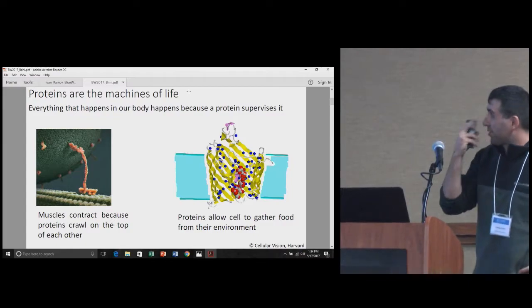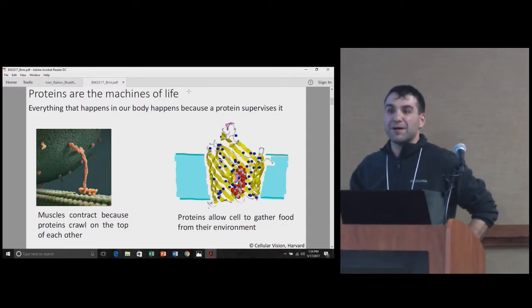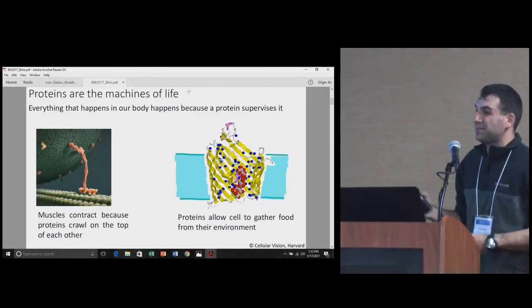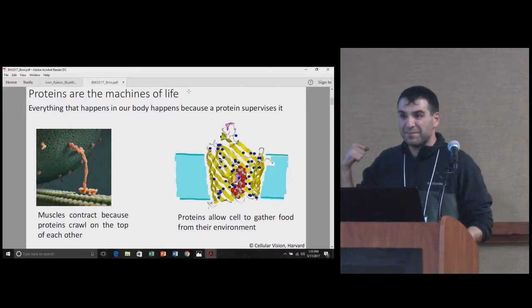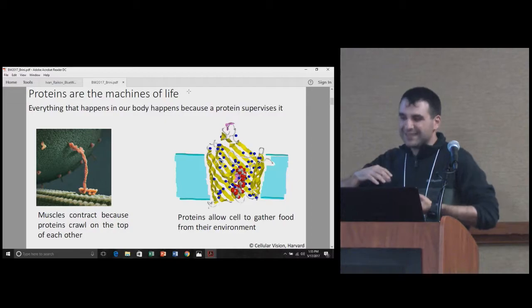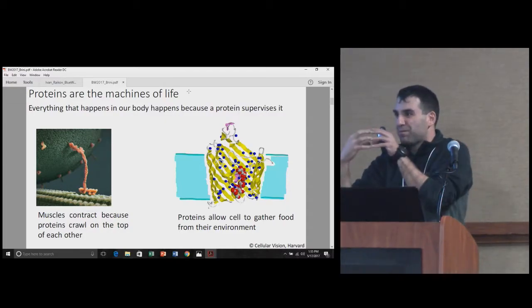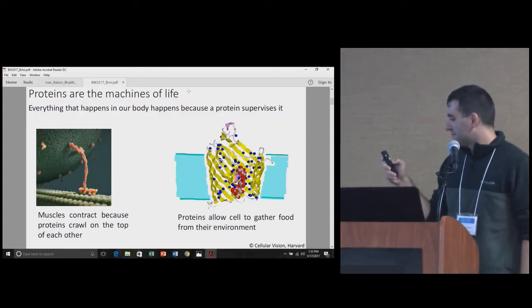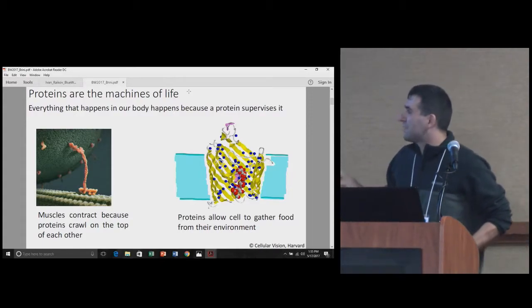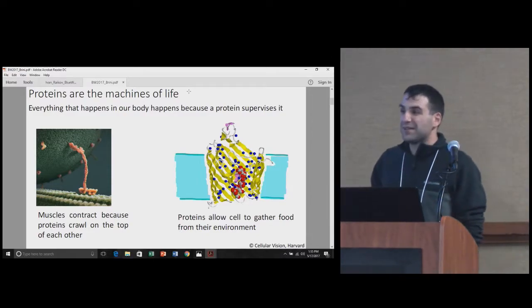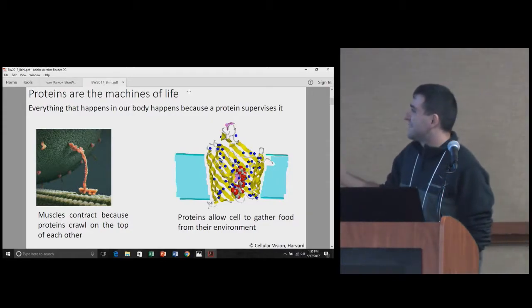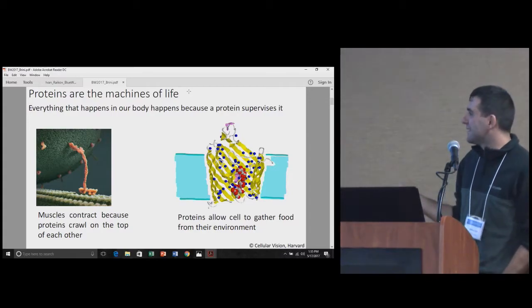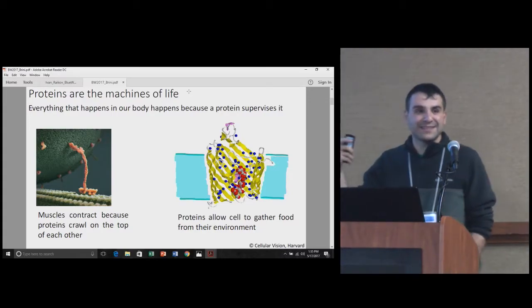My two cents about protein: why do we care about protein? Why do we study protein and why are we interested in understanding their shape? Well, proteins are the machines of life. Literally anything that happens in our body happens because a protein is taking care of it. If you want to flex your arm, your muscle needs to contract, and this happens because you have literally millions of proteins crawling on top of each other and making the fiber pull together, and this allows your arm to contract.